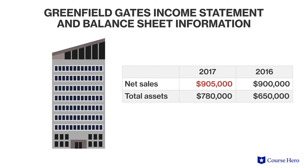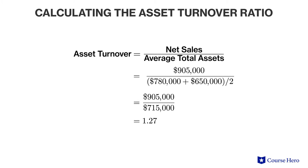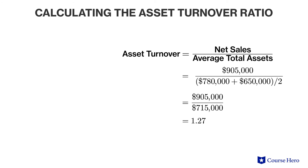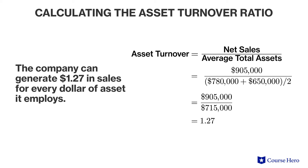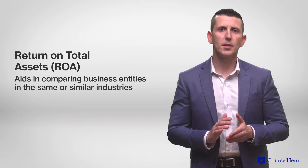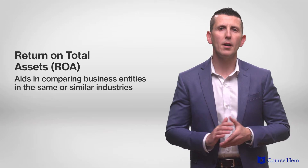Its total assets were six hundred and fifty thousand dollars in 2016 and seven hundred and eighty thousand dollars in 2017. The asset turnover ratio will be nine hundred and five thousand dollars divided by the average of six hundred and fifty thousand dollars and seven hundred and eighty thousand dollars. The result, 1.27, indicates that the company can generate one dollar and twenty-seven cents in sales for every dollar of assets it employs. The return on total assets is often referred to as return on assets, or simply ROA.